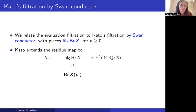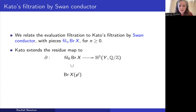When n = 0, that means elements whose evaluation factors through reduction mod π — this includes all elements of order coprime to p. When n = −1, F_{−1} consists of elements with constant evaluation — it doesn't depend on the point at all.